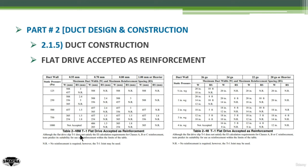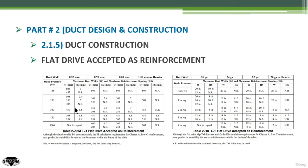This table also has some notes. Although the flat drive slip T1 does not satisfy the calculation requirement for classes A, B, and C reinforcement, tests predict its suitability for use as a reinforcement when the limits of this table are met. NR means no reinforcement is required; however, the T1 joint must be or may be used.